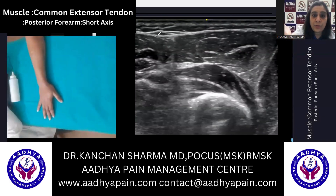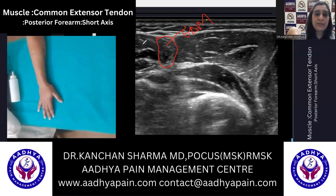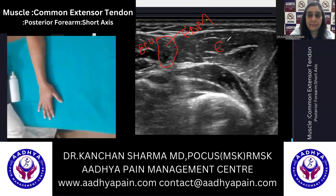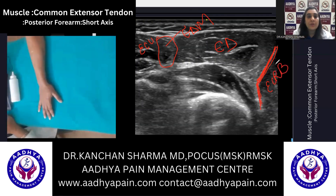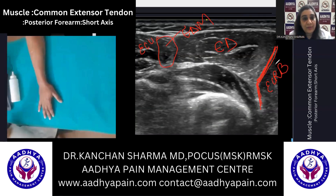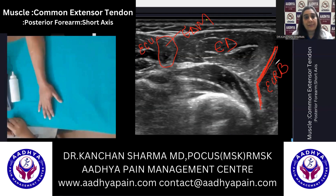What we have seen here is the extensor digiti minimi. On this side we have the extensor carpi ulnaris, then the extensor digitorum, and what you see here is basically the tendinous portion of the ECRB — extensor carpi radialis brevis. So you have ECU, extensor digiti minimi, extensor digitorum, and then ECRB.